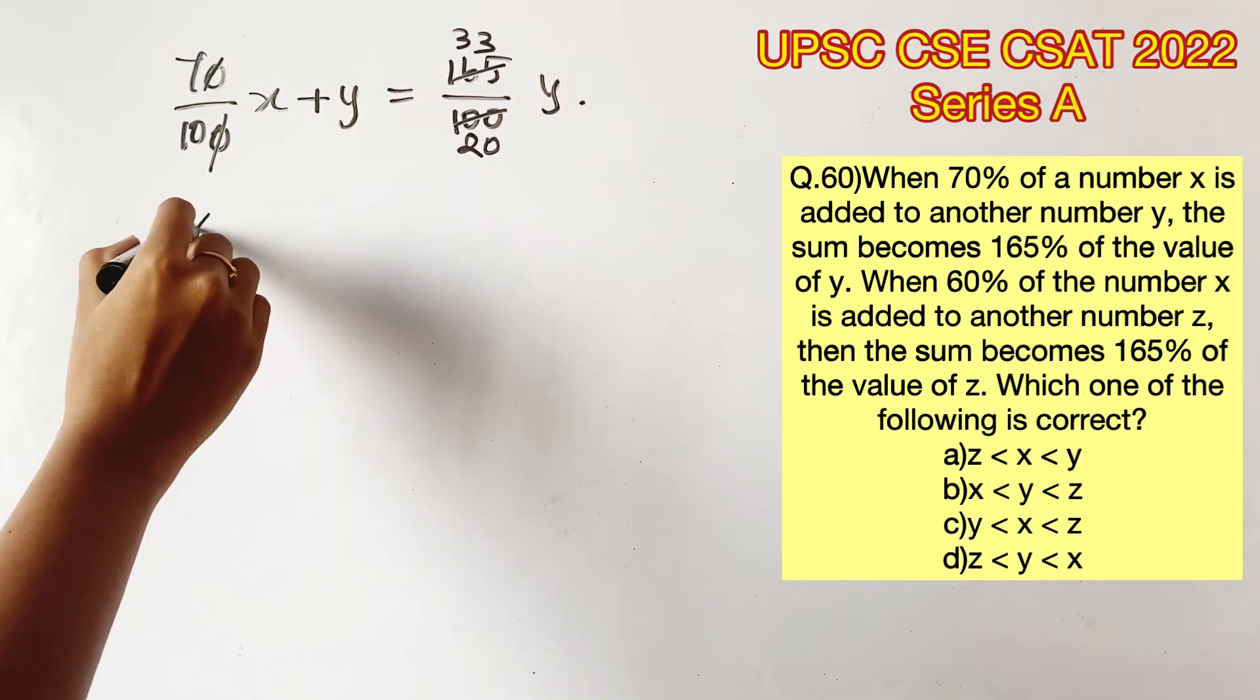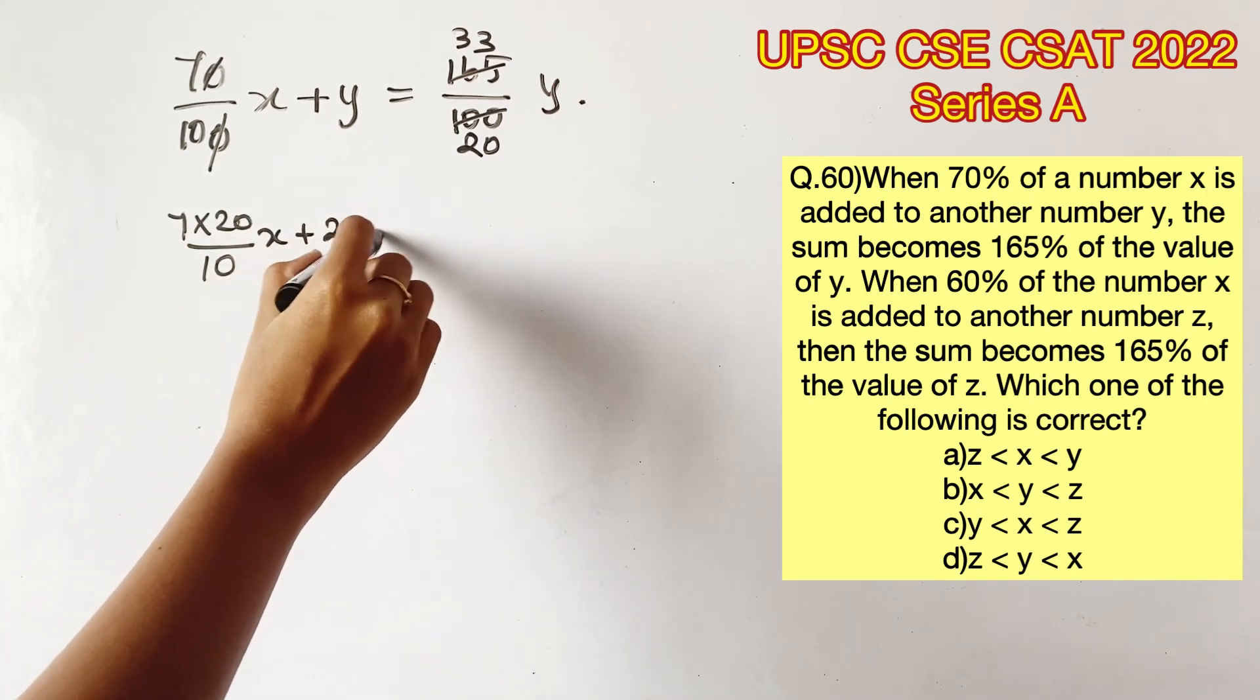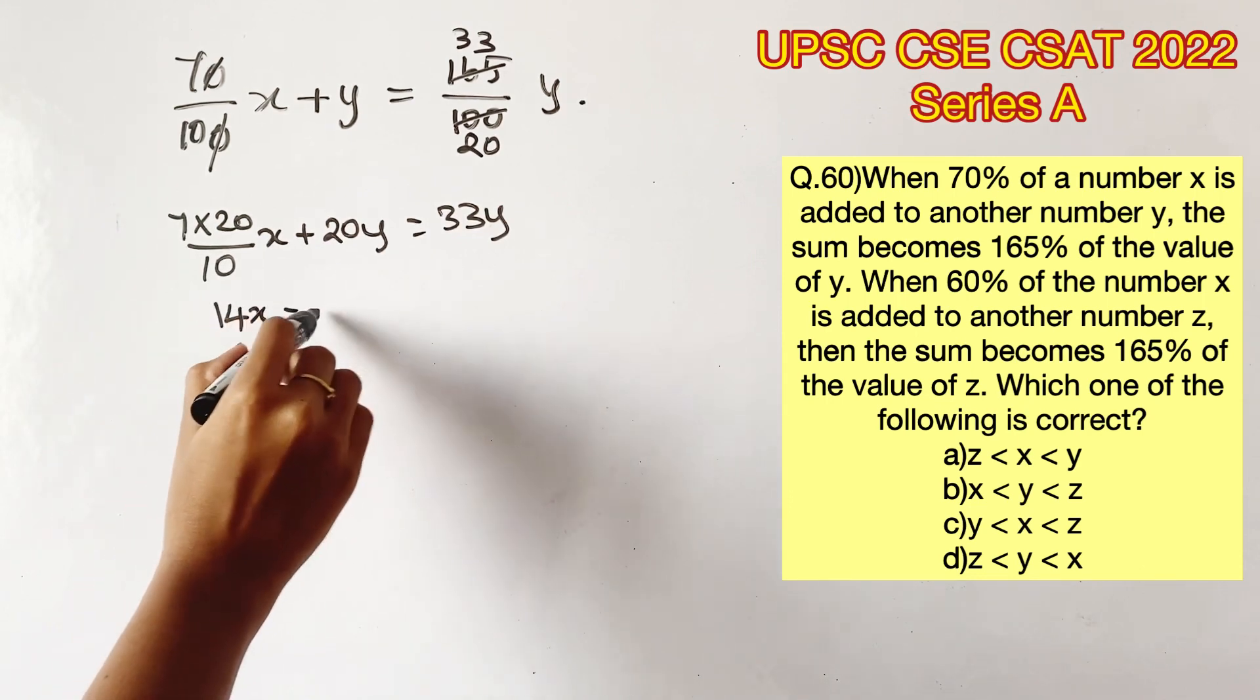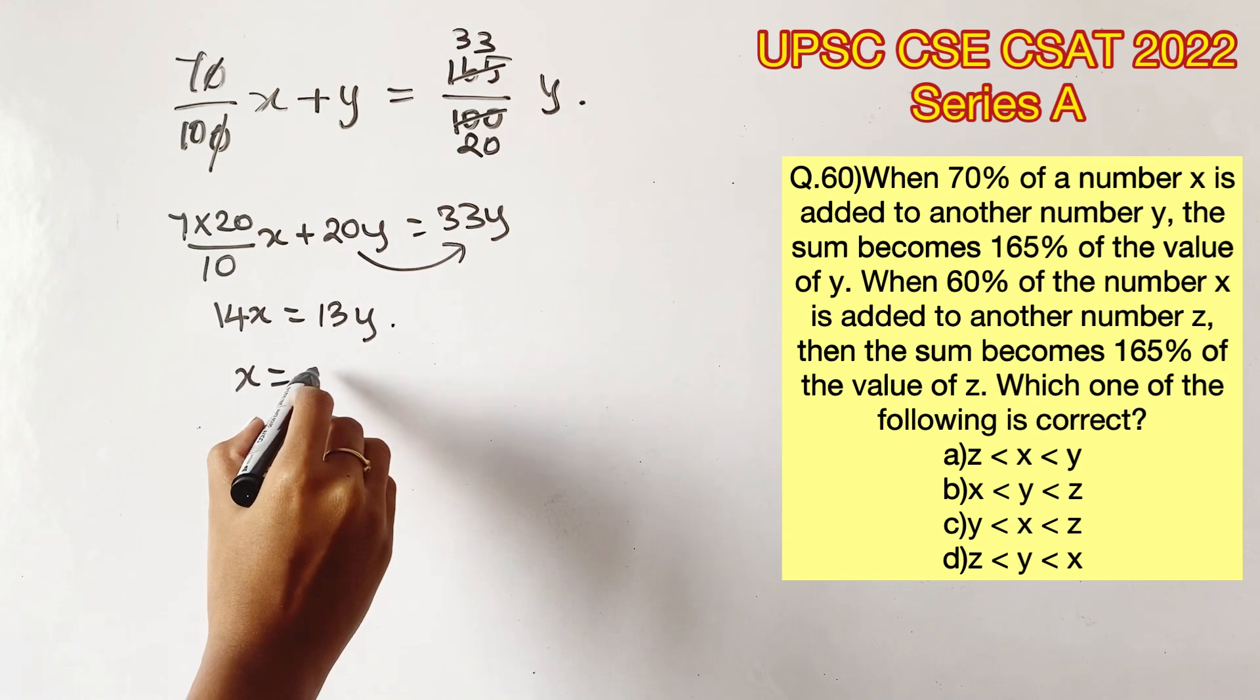Now I am multiplying the whole equation by 20. So 7 into 20 by 10 x plus 20 y is equal to 33 y, which gives us 14x is equal to 13y. So x equals 13 by 14 y.